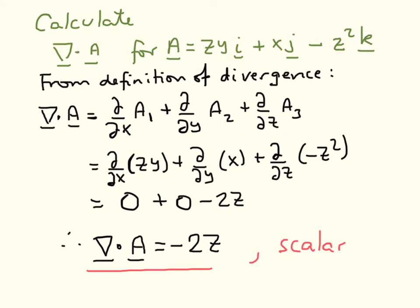Here is the answer to the first question. We want to calculate the divergence of a vector field, and the definition of the divergence is written here in three dimensions. You take the coefficient of the vector in the x direction and differentiate it with respect to x, similarly in the y direction differentiate with respect to y, and the coefficient in the z direction differentiate with respect to z, and we add those three terms together. This gives us a scalar.